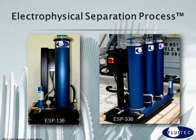We have units designed for permanent installation, like the ESP-136 that you see on the left, and units designed for rotating throughout your plants' lubricating assets, as you see with the ESP-336 on the right. This makes it very cost-effective for larger plants.